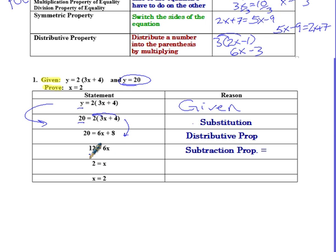Down here, how do I get from this to this? I'm dividing both sides by 6, so that's division property of equality, or my division Poe. And then finally, if I have 2 equals x and it switches over to x equals 2, that's my symmetric property. So that's an example of an algebra proof.